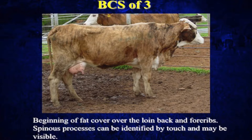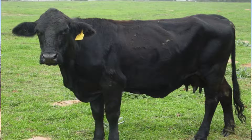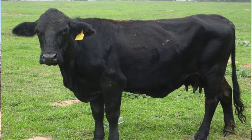Body condition score three — a lot of times when we pull the calf off the cow, we may have seen that cow slip to possibly a three, maybe a high three body condition score. When we're looking at a body condition score three, we can see her ribs, we can see her hook bones, and we can see maybe her spine a little bit. But she still hasn't really lost any muscle mass. A body condition score three is not as lean and thin as a two, but we can certainly see some ribs and some of her skeletal processes.